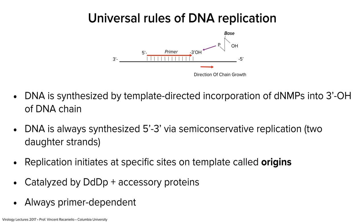The synthesis we're going to talk about today is semi-conservative, meaning a double-stranded DNA is separated and both strands get copied to a daughter strand. There are places on DNA templates called origins of replication, abbreviated as ORI, and that's simply where DNA synthesis begins. Some viruses have one origin, some have a couple. Our genome has thousands of origins because we have lots of sequence — if we had only one, it would take forever to duplicate the genome.